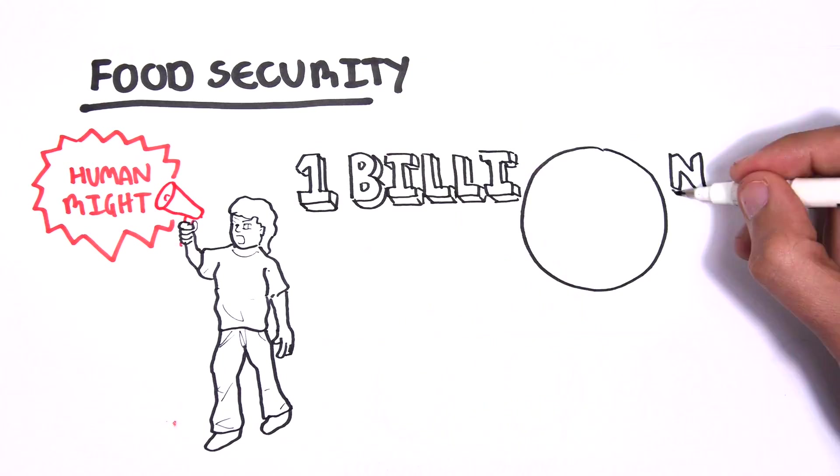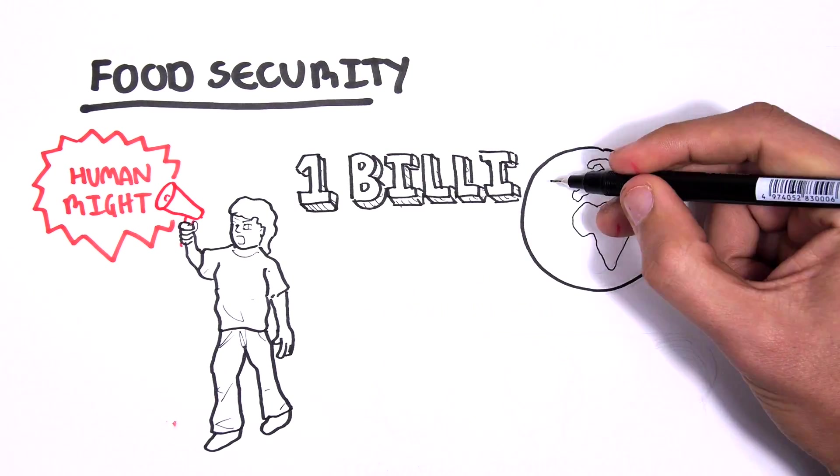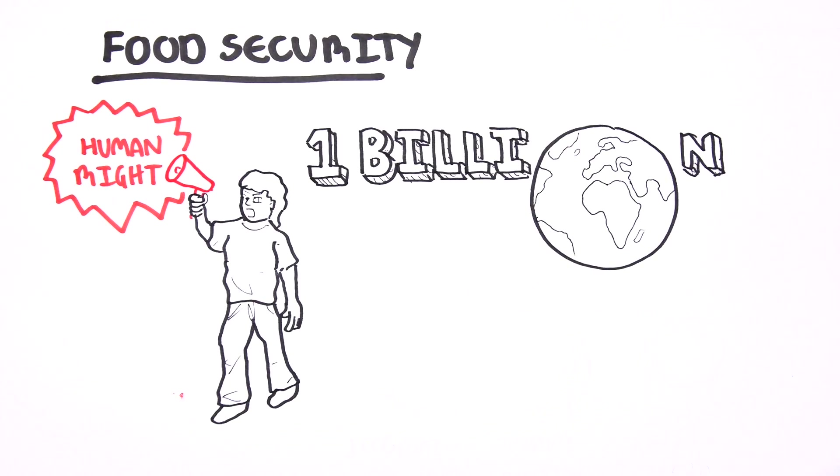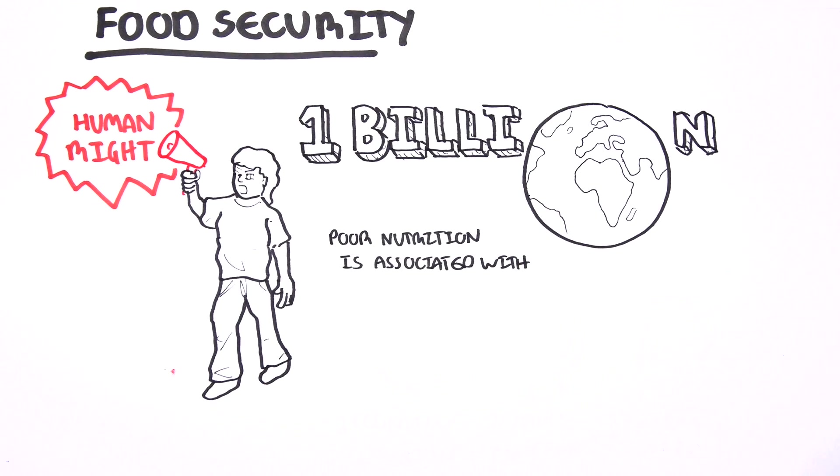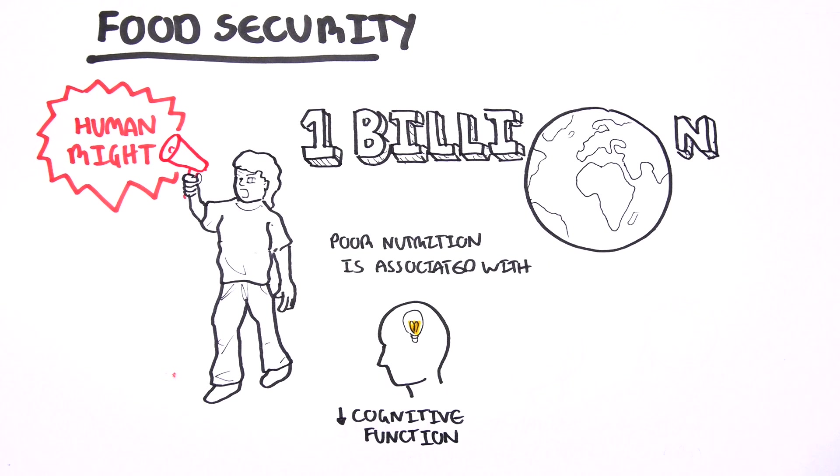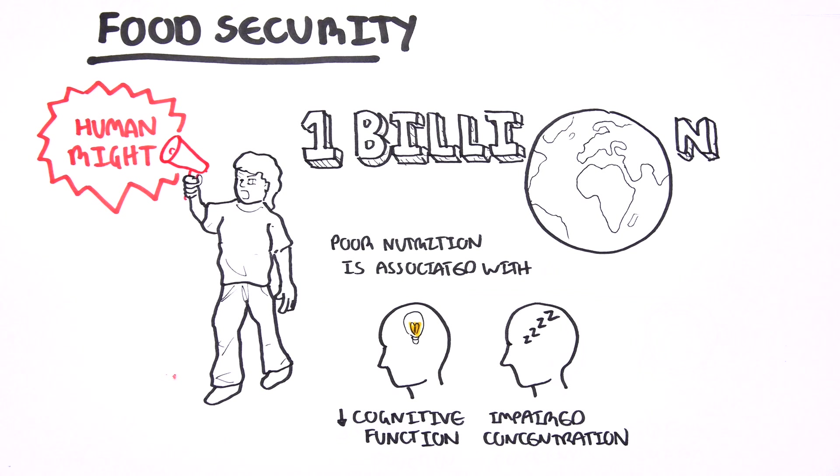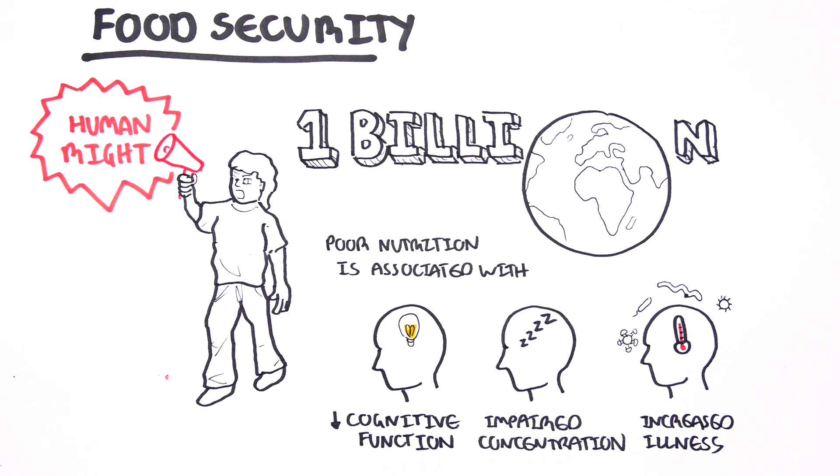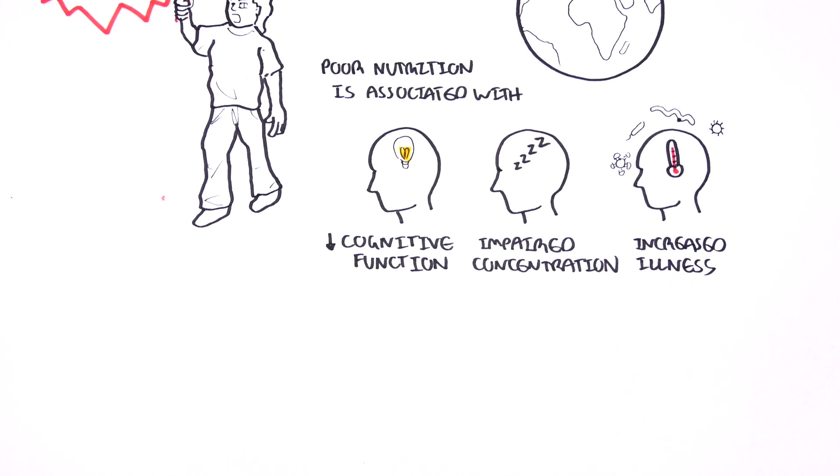Food is a fundamental human right, yet already more than 1 billion people experience hunger. Poor nutrition is associated with reduced cognitive function, impaired concentration, and increased illness. This in turn can reduce the earning capacity for the individual by up to 20%, which otherwise could have been an important part of economic growth.